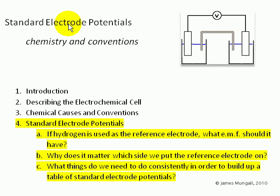And the three questions we're going to look at now are: if hydrogen is used as the reference electrode, what EMF should it have? Number two, why does it matter which side we put the reference electrode on? And finally, what things do we need to do consistently in order to build up a table of standard electrode potentials?